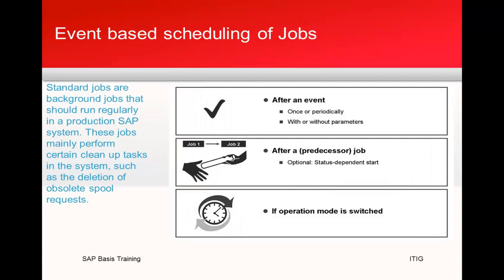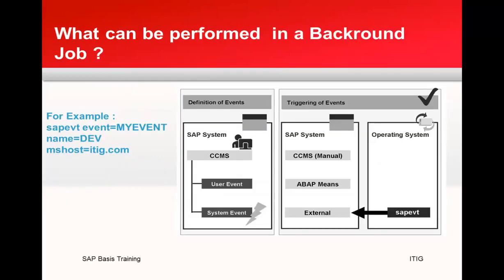Event-based jobs are triggered after an event occurs — for example, after a predecessor job finishes or when an operating mode is switched. To create an event, you can create a definition using CCMS (Central Monitoring System). Events can be user-based or system-based. Triggering an event can happen in three ways. At the OS level, the command used is: sapevt event=<event_name> name=<SID> with the message server host name.